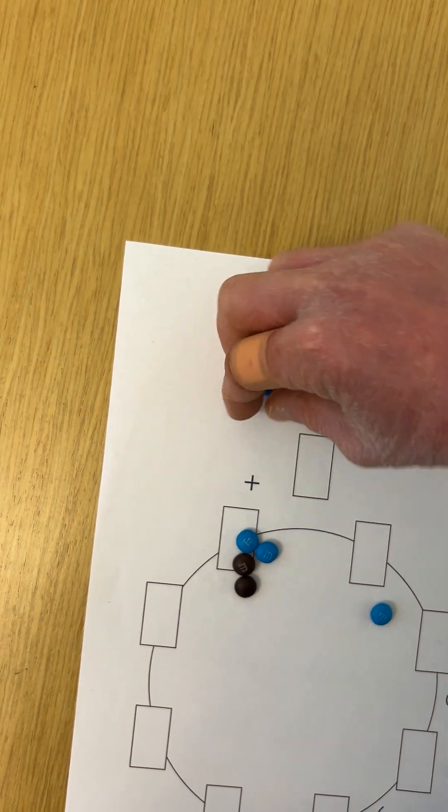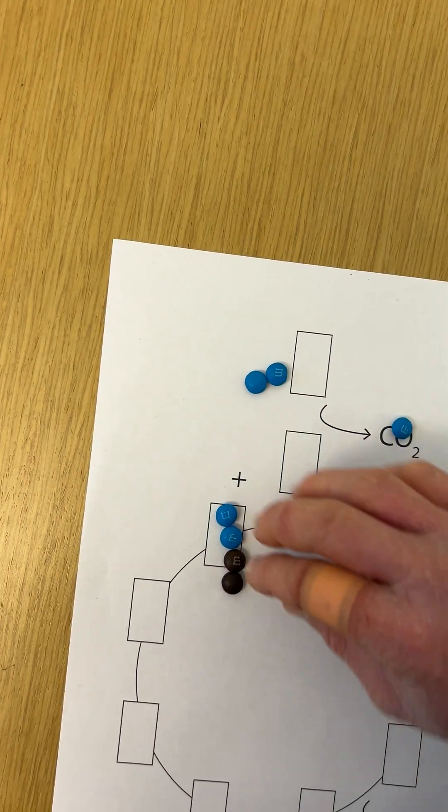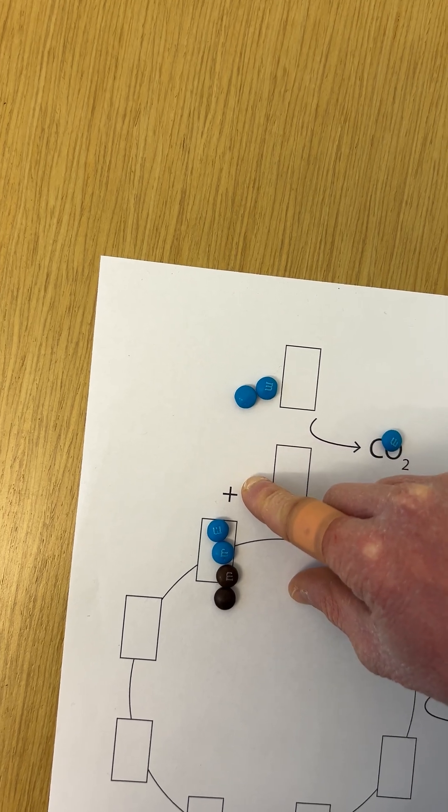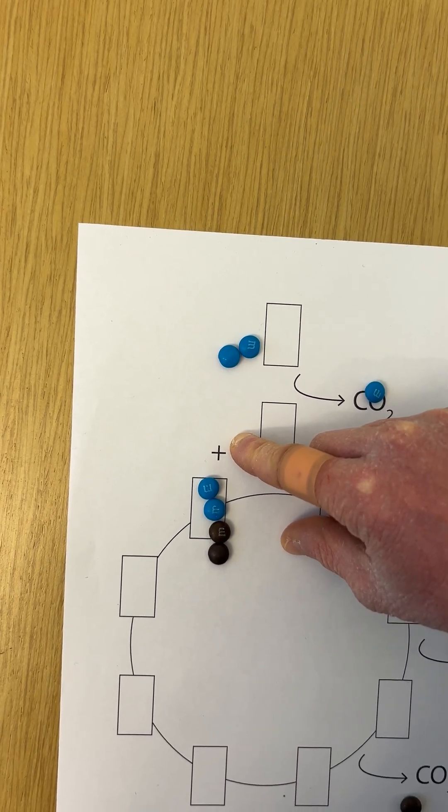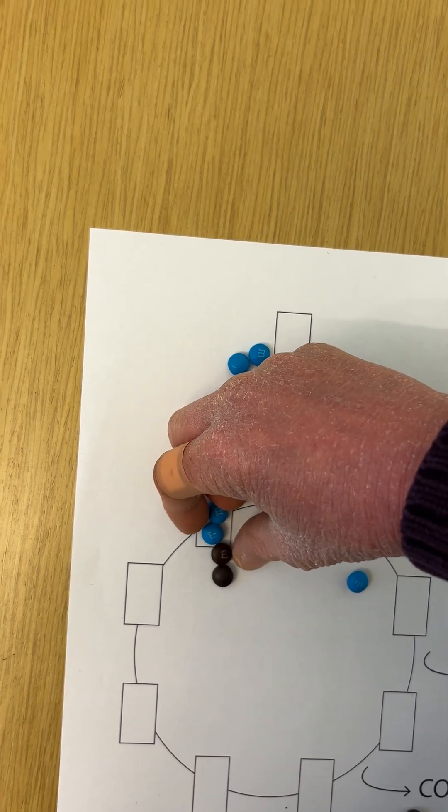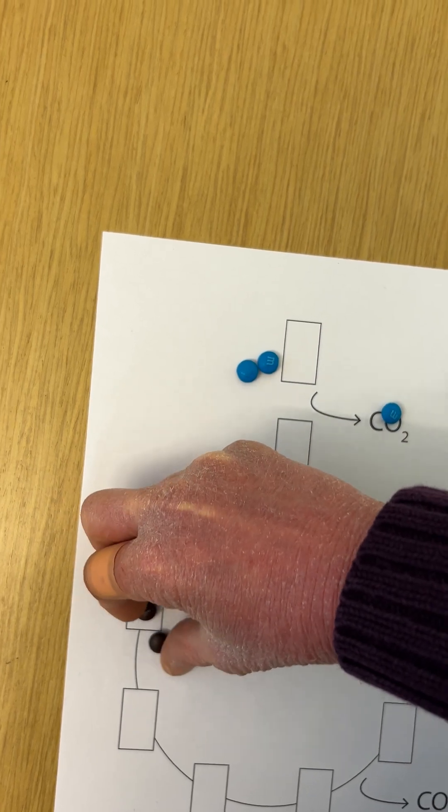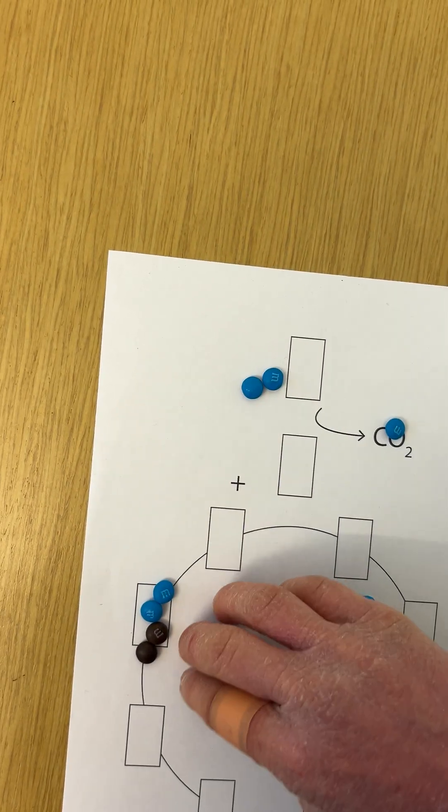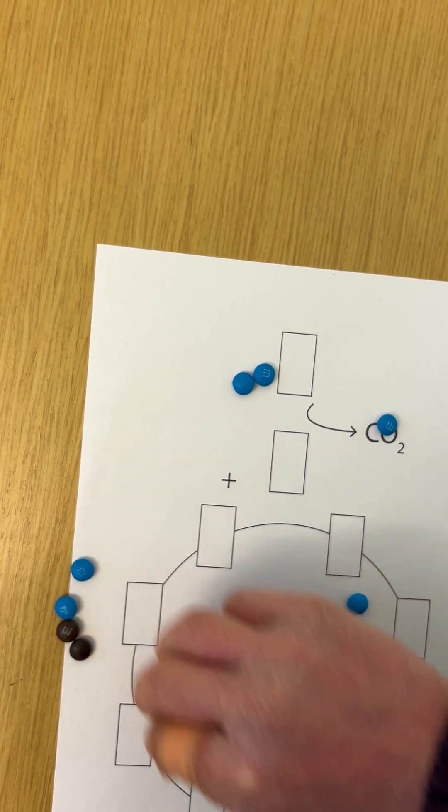Now imagine that you want to make glucose. You want to take this oxaloacetate and use it to make glucose. Well, you can't take oxaloacetate out of the mitochondria, but you can take malate. So if we transform this to malate, we can take this out of the cycle and use it to make glucose.